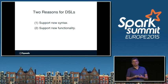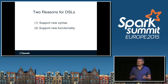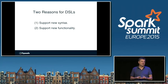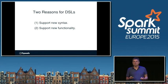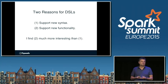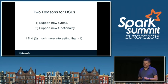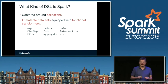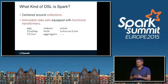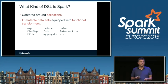There are two reasons for domain-specific languages. Quite a few are there because they want to support new syntax — Scala is a cheap way to implement that new syntax. The second is to support new functionality, and I believe we find the second much more interesting, because that's where you go deeper. Spark is clearly an example of the second kind. It's very conservative with syntax, and I think that's one of its strengths — it reuses a lot of things we know from Scala but adds really powerful functionality.